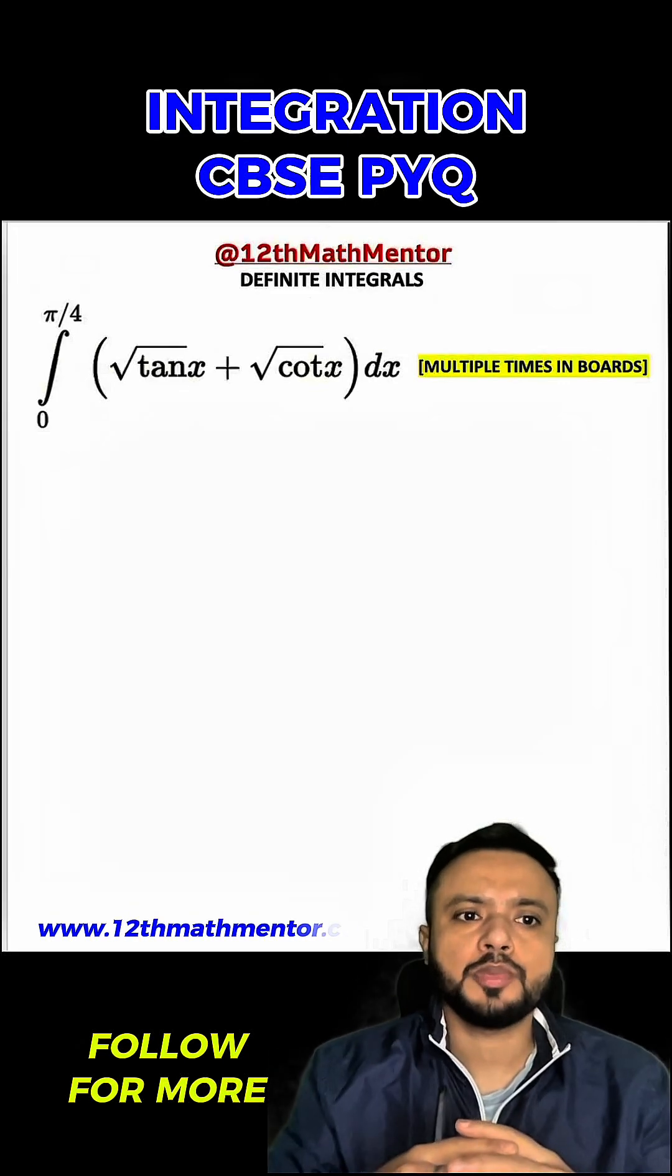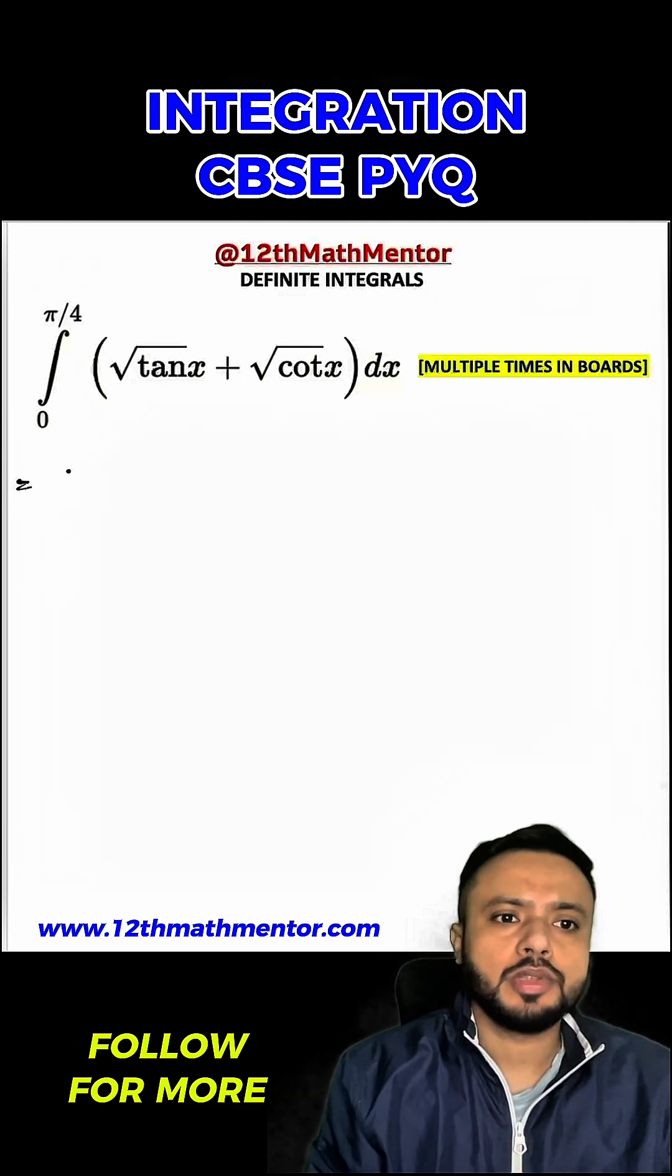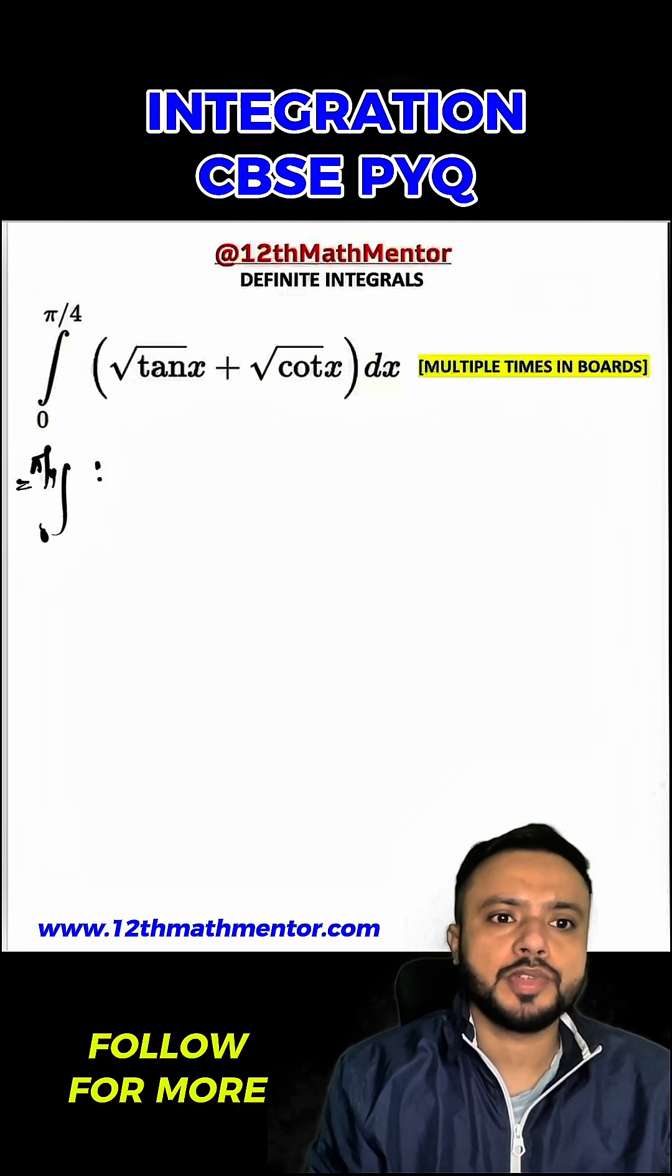Integration of root of tan x plus root of cot x with respect to dx from 0 to pi by 4 has been asked multiple times in Class 12 math board examination. So to solve this integral, first I'm going to convert everything in terms of sine and cos. It would be root of sine x upon cos x plus root of cos x upon sine x dx.